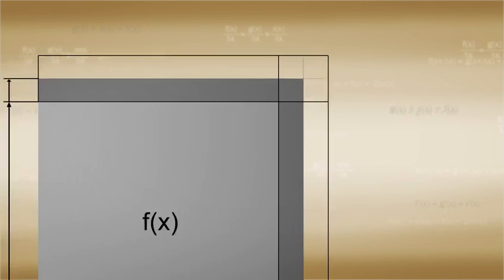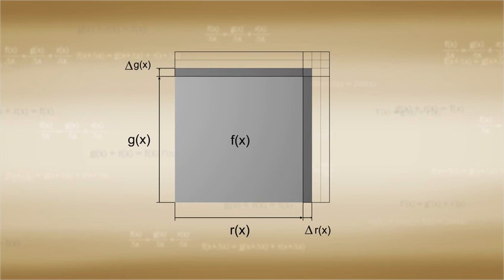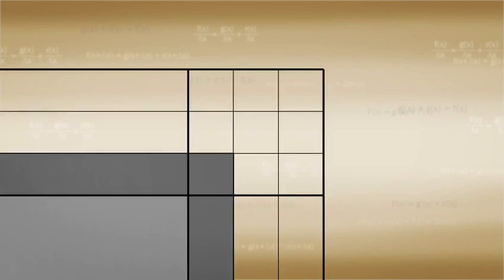If we make the Δx one-third of its original size, then the two big areas are also one-third of their original sizes, but the smaller area becomes one-ninth of its original size.